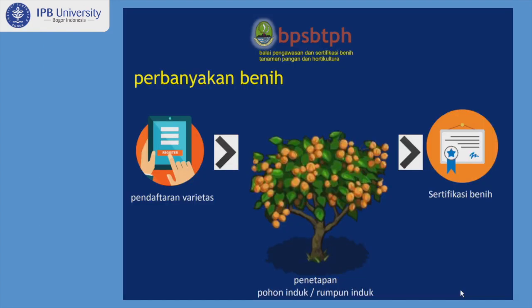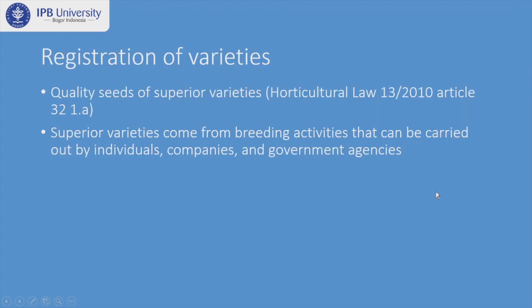This is the common scheme of distribution and certification. First you need to do variety registration, then it becomes a mother plant or cluster plant, and after that certified seed can be applied. First is the registration of variety — quality seeds of superior variety are stated in horticultural law.